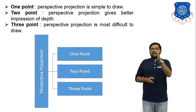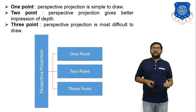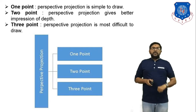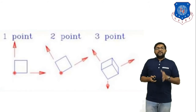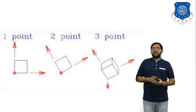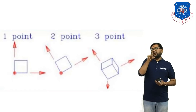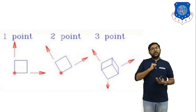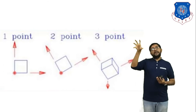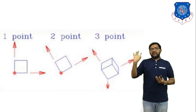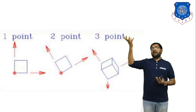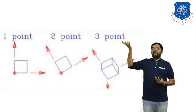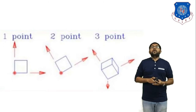Perspective projection has three methods, as seen in this diagram: one point, two point, and three point. In the figure, if you have one rectangle and consider a single point with two directions, one projection is generated on the projected plane — that is one-point projection. For two-point projection, if the object is in an inclined position, you consider two points. For three-point projection, if the object is in 3D space, it is projected in all planes — top view, side view, and front view — using three-point perspective projection.